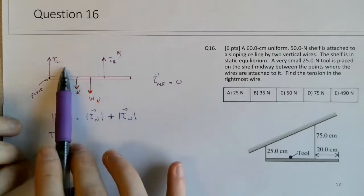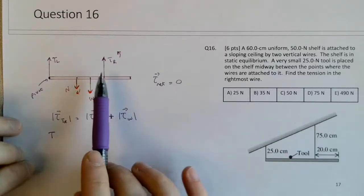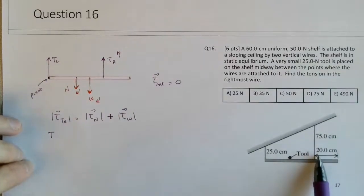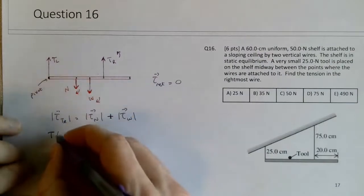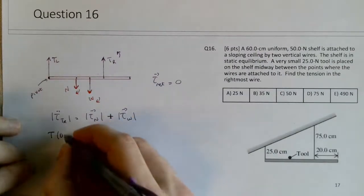So the tension right is 20 centimeters from the right end. It's a 60 centimeter uniform rod. So this is 40 centimeters from where I put my pivot point. So this is 0.4 meters.